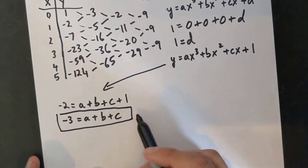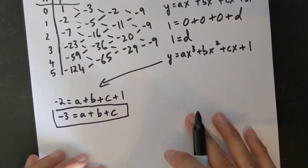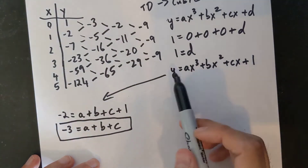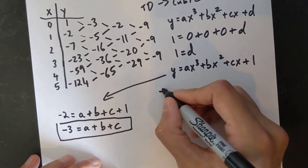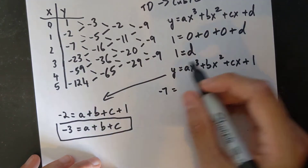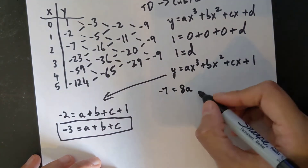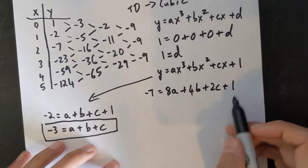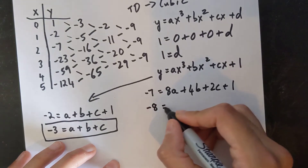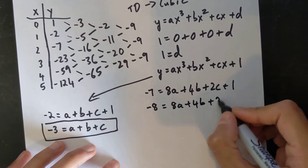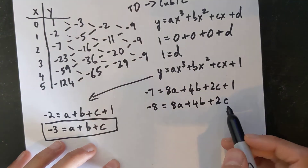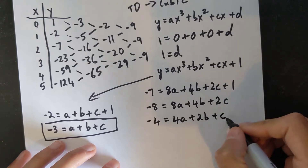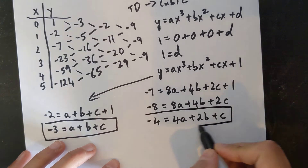I can't solve this with three variables, so I need two more equations. Going to my third point: x = 2 and y = −7. Subbing in: −7 = 8a + 4b + 2c + 1. Moving the 1 over gives −8 = 8a + 4b + 2c. Dividing everything by 2: negative 4 equals 4a + 2b + c. That's my second equation.